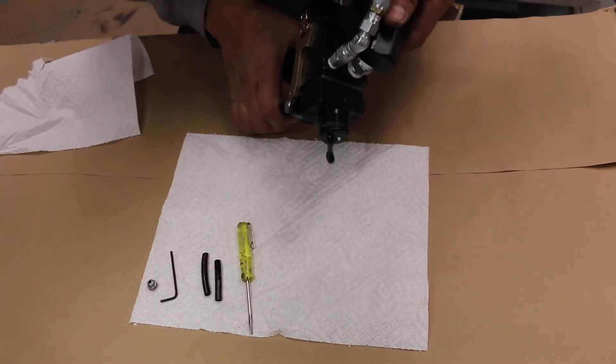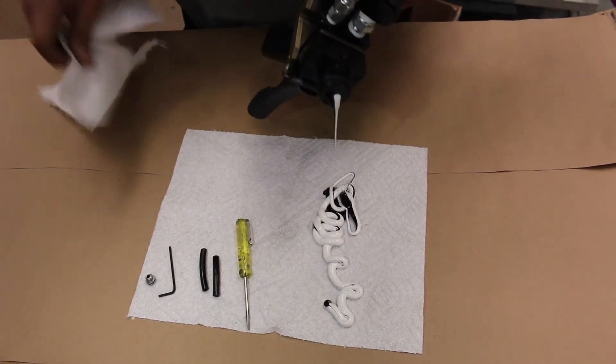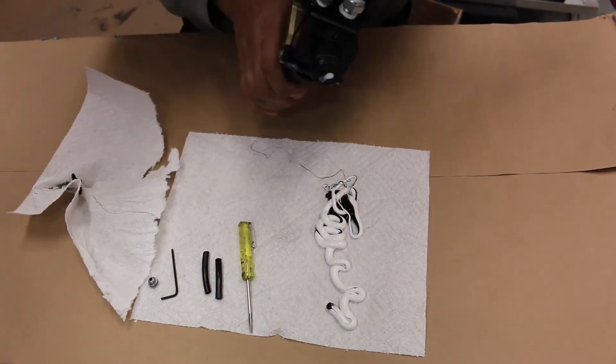Squeeze the applicator trigger until both materials emerge. Wipe the end of the applicator. Now squeeze the trigger very lightly to see which material emerges first, in this case catalyst.